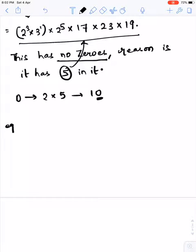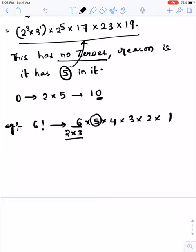We will take an example like 6 factorial, which is 6 × 5 × 4 × 3 × 2 × 1. We have one 5. Here 2 × 3 is 6, 2 and 2, but only one 5. That means one 0.